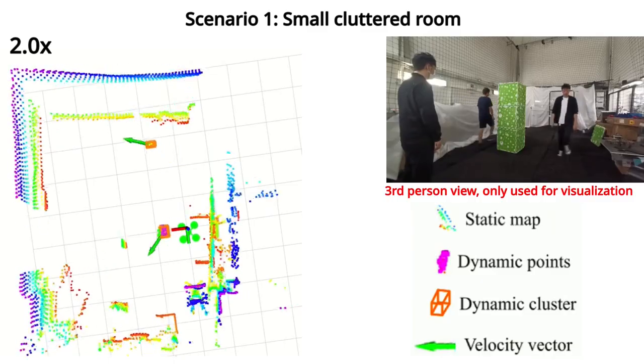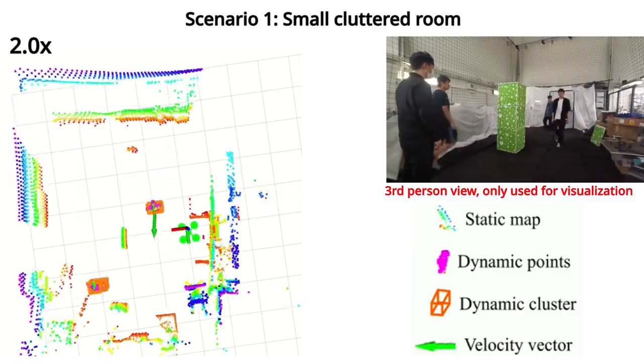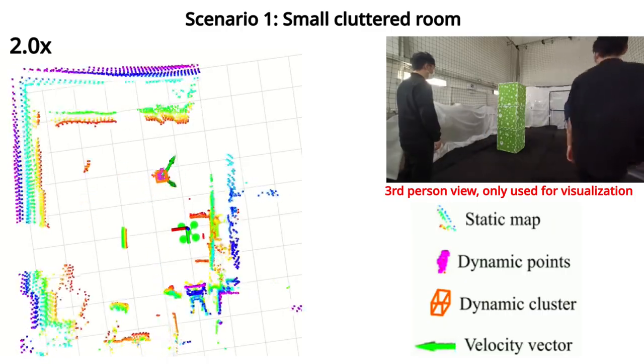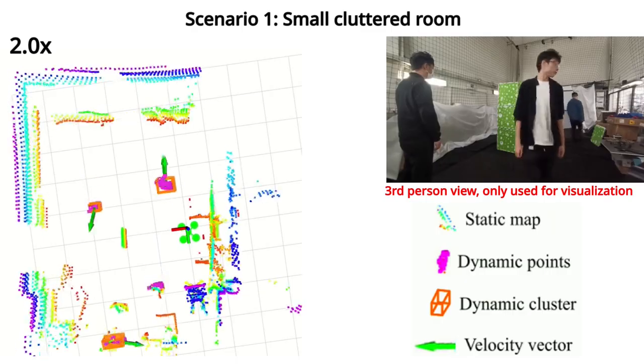We first test our method in a small cluttered room with four persons with various motion types, sometimes occluded by static obstacles. All dynamic objects are segmented with no false detection.